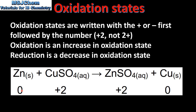For the zinc we have an increase in oxidation state from 0 to plus 2, therefore the zinc is being oxidized. The copper 2+ ion has an oxidation state of plus 2 and the copper has an oxidation state of 0 — that's a decrease in oxidation state, therefore the copper 2+ ion is being reduced.